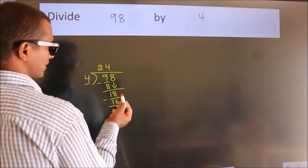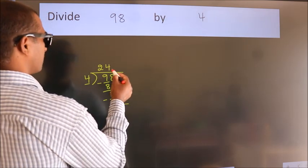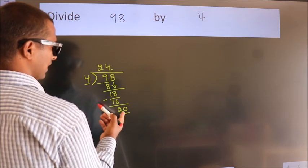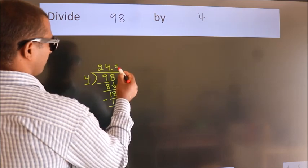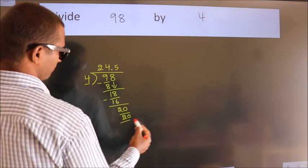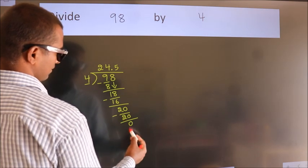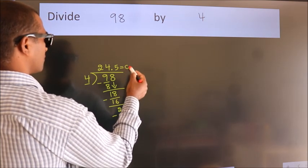there are no more numbers to bring down, so what we do is put a dot and take 0, making it 20. When do we get 20 in the 4 times table? 4 fives equals 20. Now we subtract and we get 0. We got remainder 0, so this is our quotient.